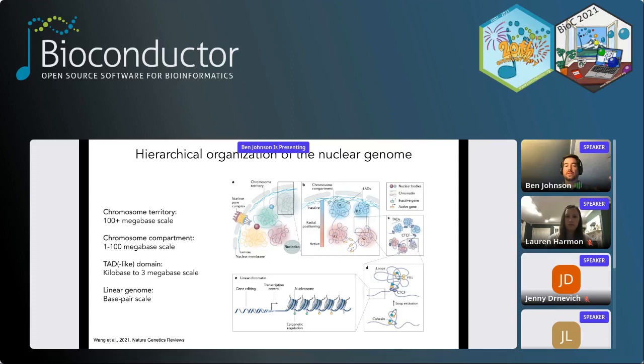As a bit of background, the nuclear genome is hierarchically organized. Starting at the largest scale, we have chromosome territories at the 100+ megabase scale. Zooming in, we can define chromosome compartments ranging from 1 to 100 megabases, divided into A and B compartments — A is associated with active gene expression and euchromatic space, while B compartments are associated with lower gene expression and heterochromatic space. The most dynamic domains are topologically associated domains, or TADs, ranging from the kilobase up to the 3-megabase scale, down to the base-pair scale for individual bases.